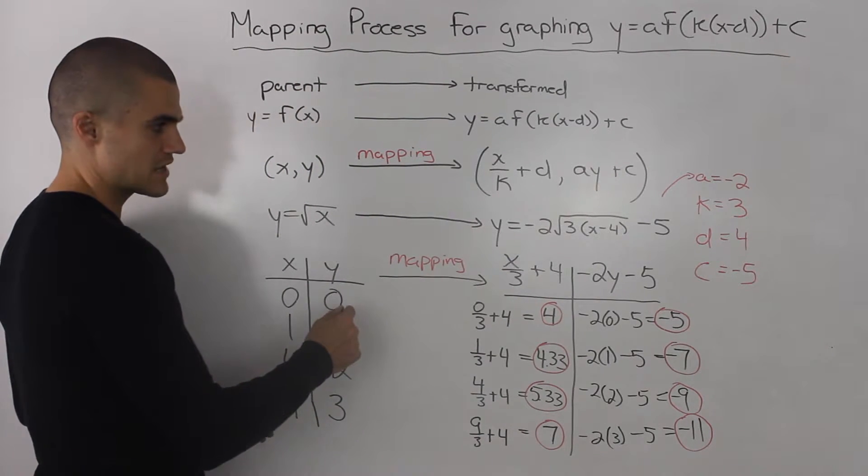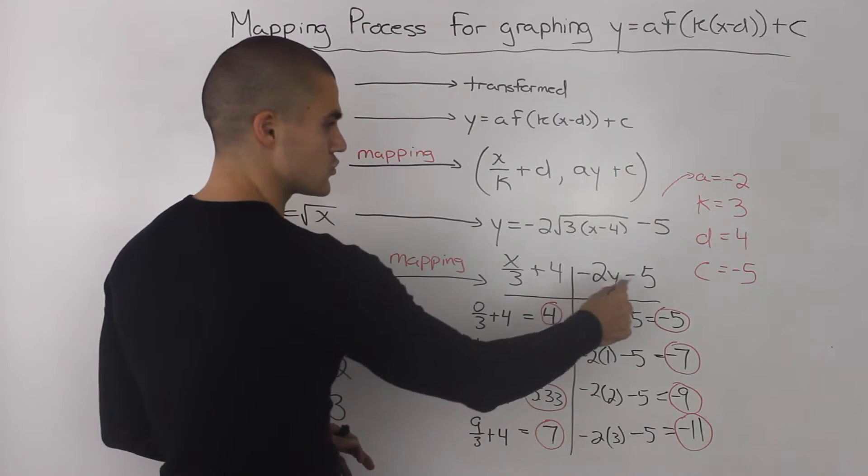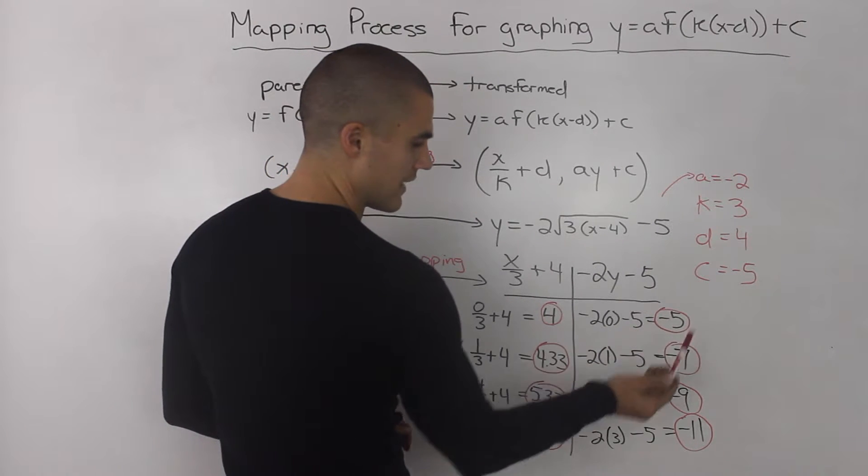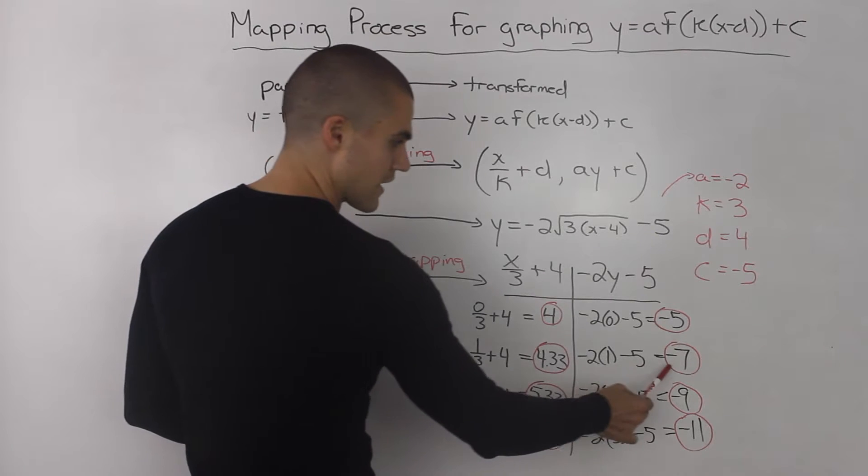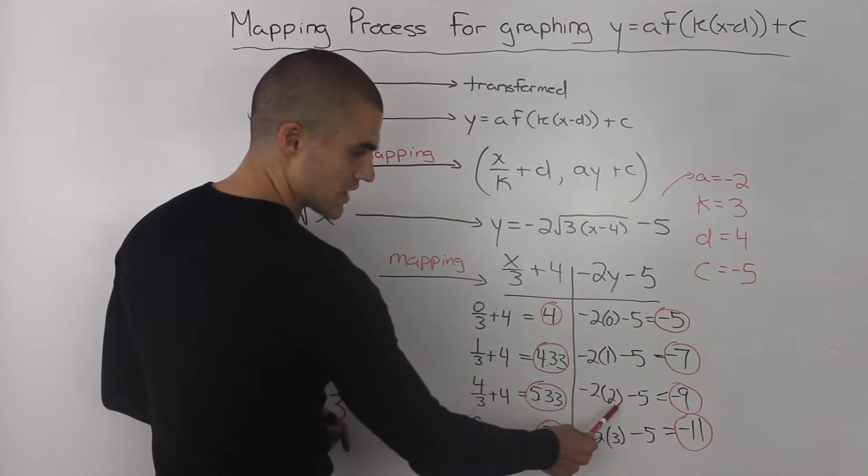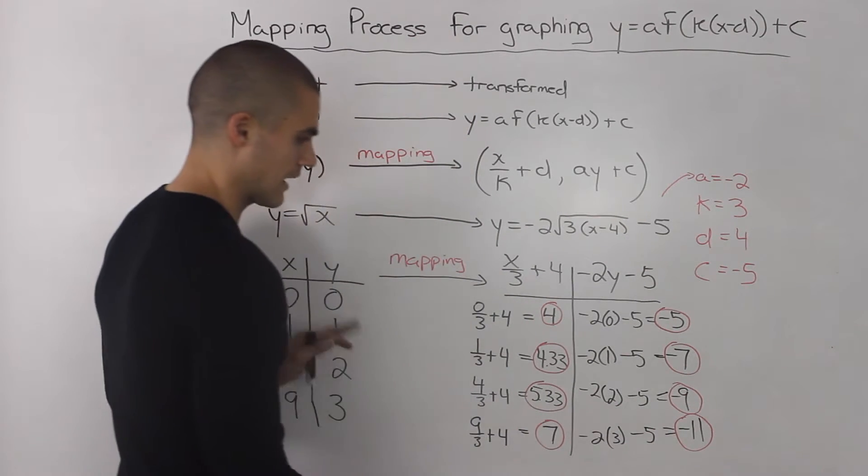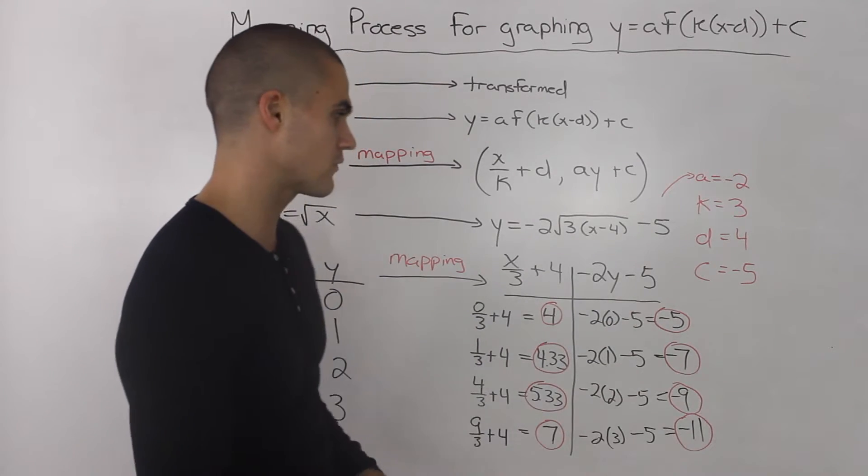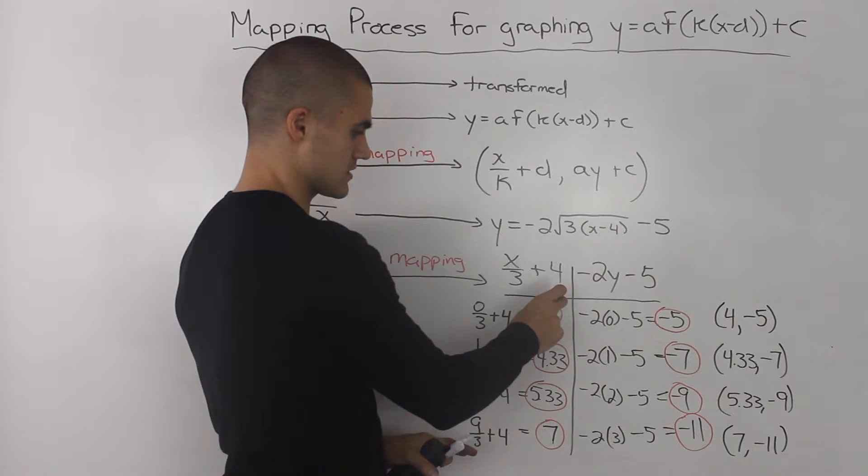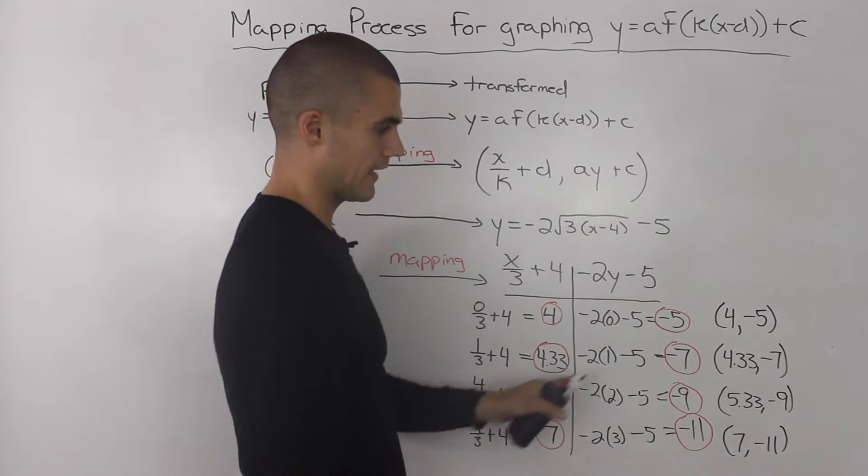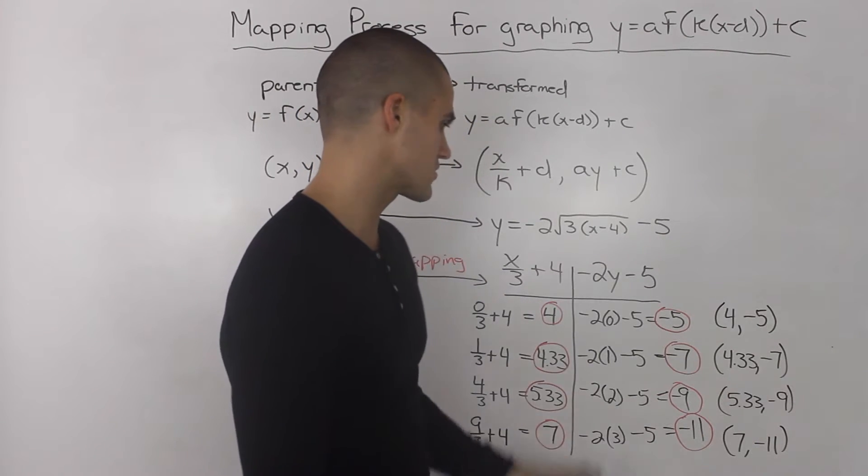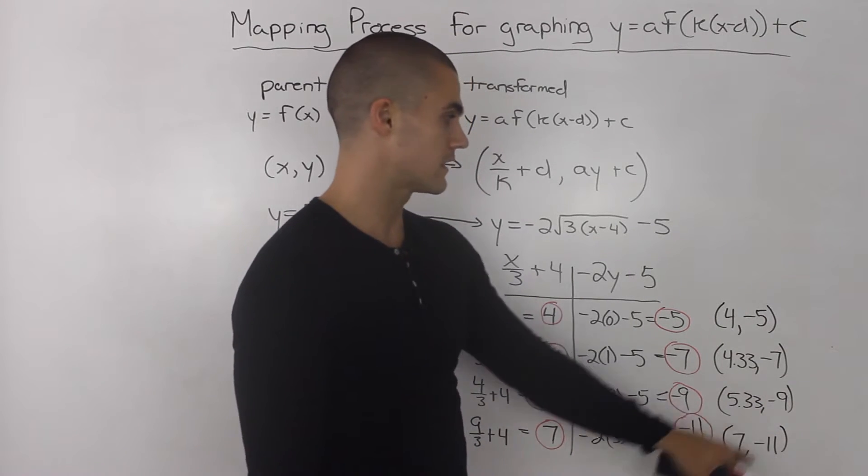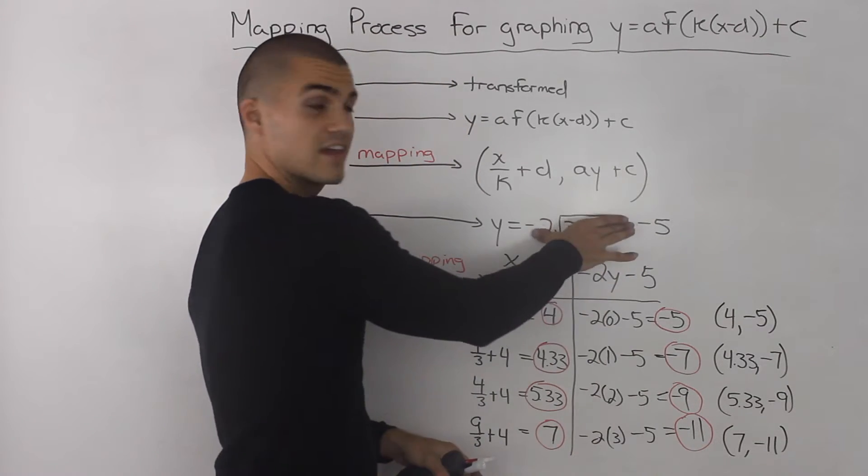Then we do the same thing for the y values, except we put them through this formula, negative 2y minus 5. This y value of 0, we would take negative 2, multiply it by 0, and then subtract 5, and we end up with negative 5. Negative 2 times 1 minus 5 gives us negative 7. Taking this y value of 2, negative 2 times 2 minus 5 gives us negative 9, and so on. I circled our results, and these represent the x and y coordinates of the transform function. Here I took all of these final values for x and y that are circled in red, and made it into nicer coordinate form: 4 and negative 5, 4.33 and negative 7, 5.33 and negative 9, and then 7 and negative 11.